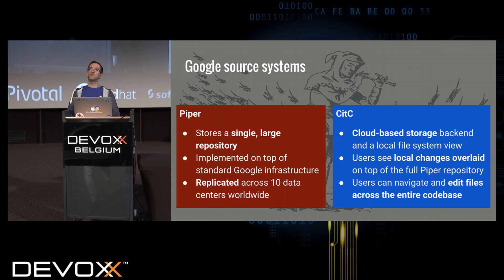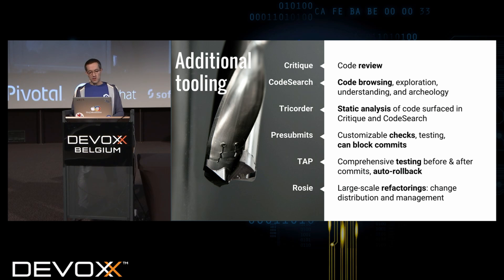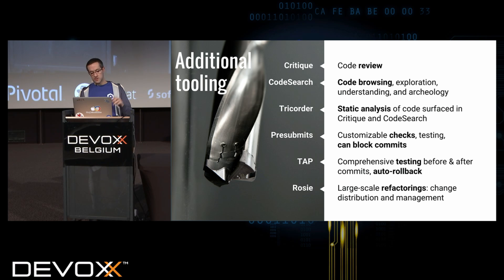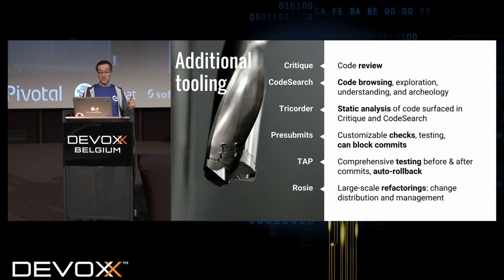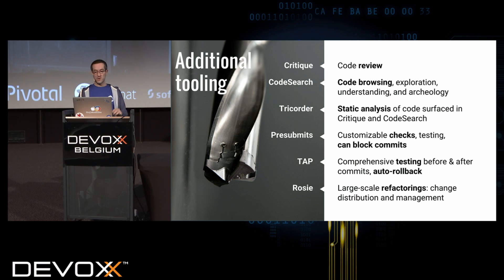What's interesting is that anybody is able to look at a particular project's source files. In addition to that, we have other tools: Critique for code reviews, code search so you can see where code is being used, tools for static analysis, pre-submit checks. TAP is our testing infrastructure that does the auto-rollback if too many tests fail. And Rosie handles refactorings across the whole repository — like refactoring within your IDE, but for the whole repository. If something is used across all projects, it's able to do the refactoring at that scale.